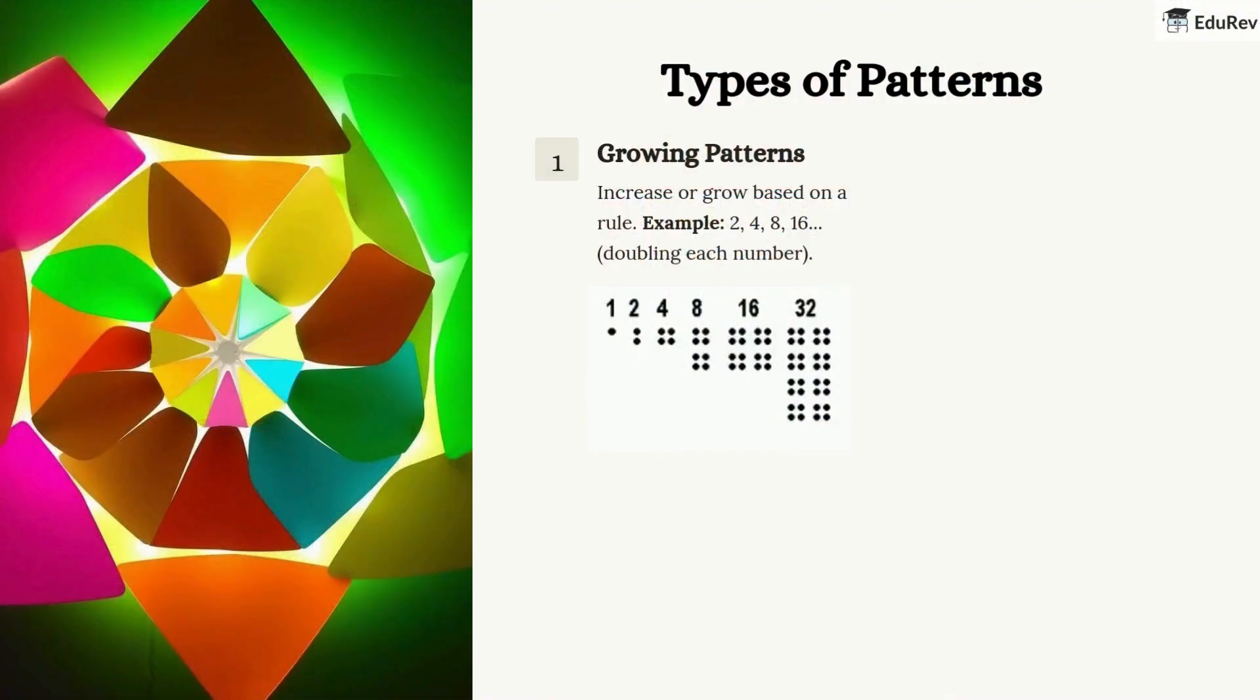Now, let's talk about the types of patterns. The first type is a growing pattern. Here, the pattern grows or increases. For example, 2, 4, 8, 16 - each number is double the previous one.